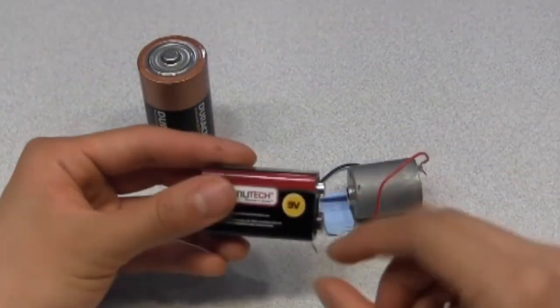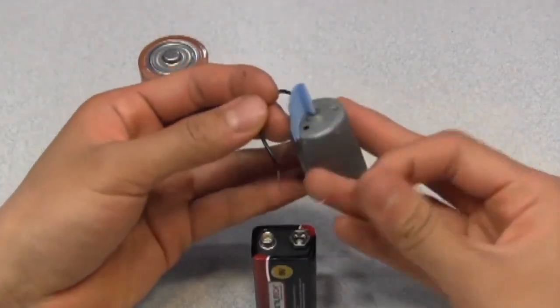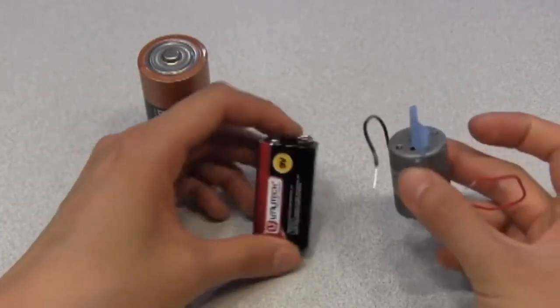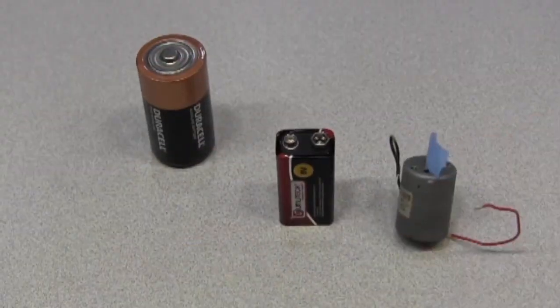Look at this guy. It's a 9-volt battery. It can provide more power, so when I hook up the motor, it spins a lot faster. Now, let's look at the second criteria of the circuit.